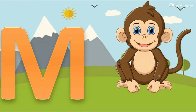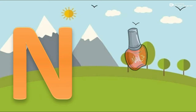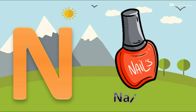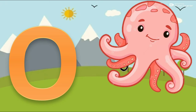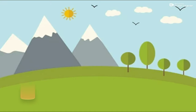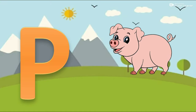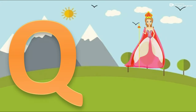M for monkey. N for nail polish. O for octopus. P for pig. Q for queen.